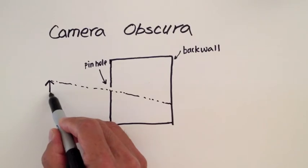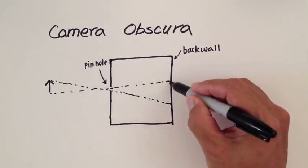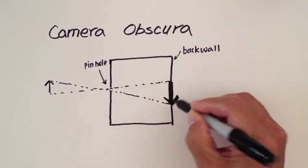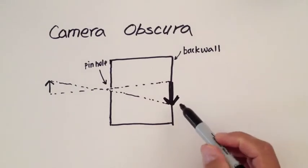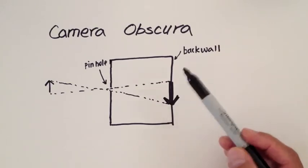This phenomena was discovered before the invention of photography and was known as the camera obscura. Do you notice the image on the back wall is inversed? Now let's talk about the inverse of image.